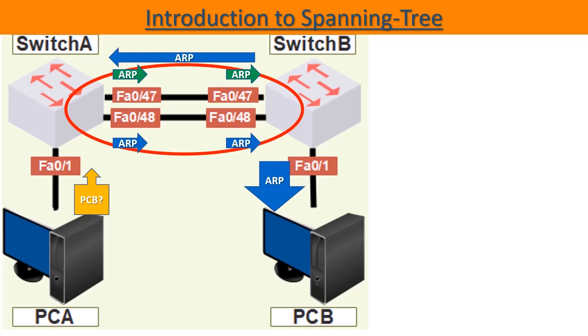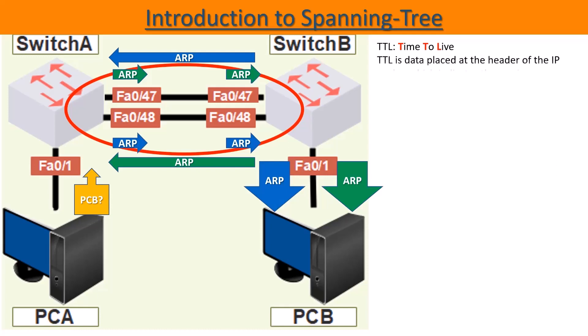The frame received on port 48 will be transmitted on port 47 and towards PCB. And the same ARP request received on port 47 will also be transmitted on port 48 and to PCB, which brings us to a network loop. Since Ethernet frames have no TTL field, the frames will loop indefinitely until the switches crash because they are overloaded with traffic, or until one of the network cables between the two switches is disconnected.